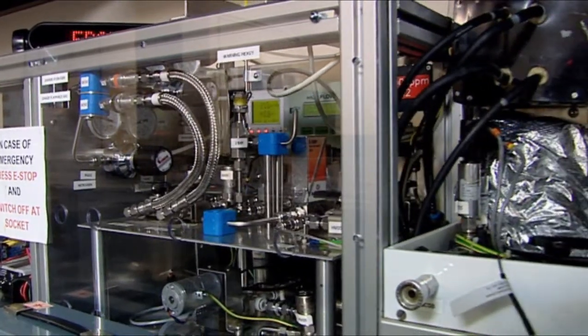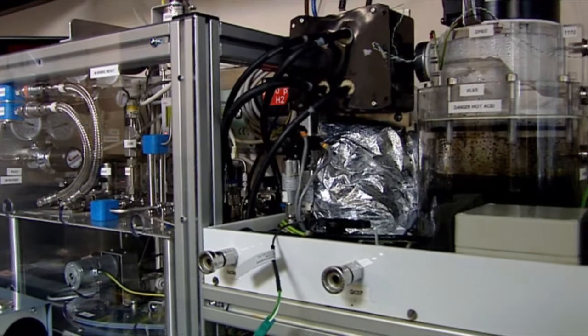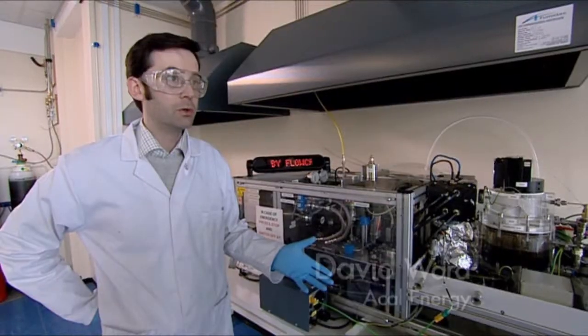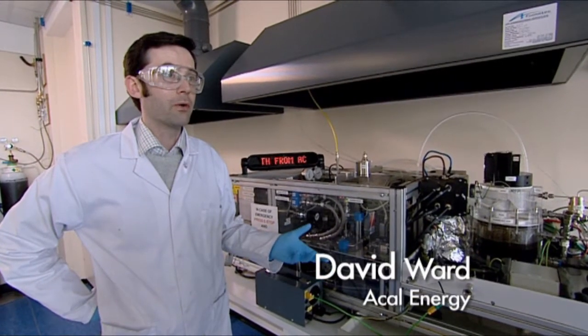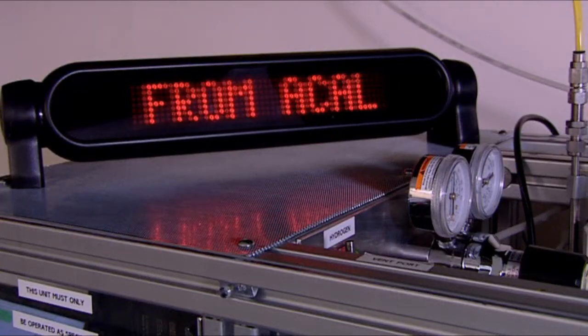Okay, so this is ACAL's 50 watt demonstrator. Basically what we're seeing is a mini power plant. It's been designed to produce enough power to power itself and produce a small surplus to power the sign that you can see operating here.